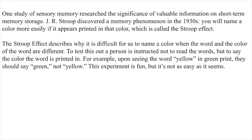One study of sensory memory researched the significance of valuable information on short-term memory storage. J.R. Stroop discovered a memory phenomenon in the 1930s: you will name a color more easily if it appears printed in that color, which is called the Stroop effect. The Stroop effect describes why it is difficult to name a color when the word and the color of the word are different. A person is instructed not to read the words, but to say the color the word is printed in — for example, upon seeing the word 'yellow' in green print, they should say green, not yellow. The experiment is fun, but not as easy as it seems.